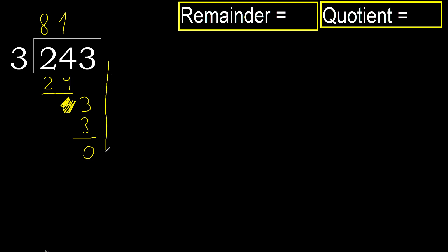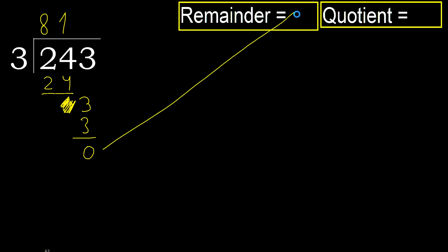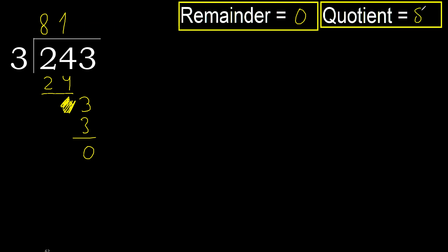Next — there is no number remaining, so we finish. 243 divided by 3 is 81.